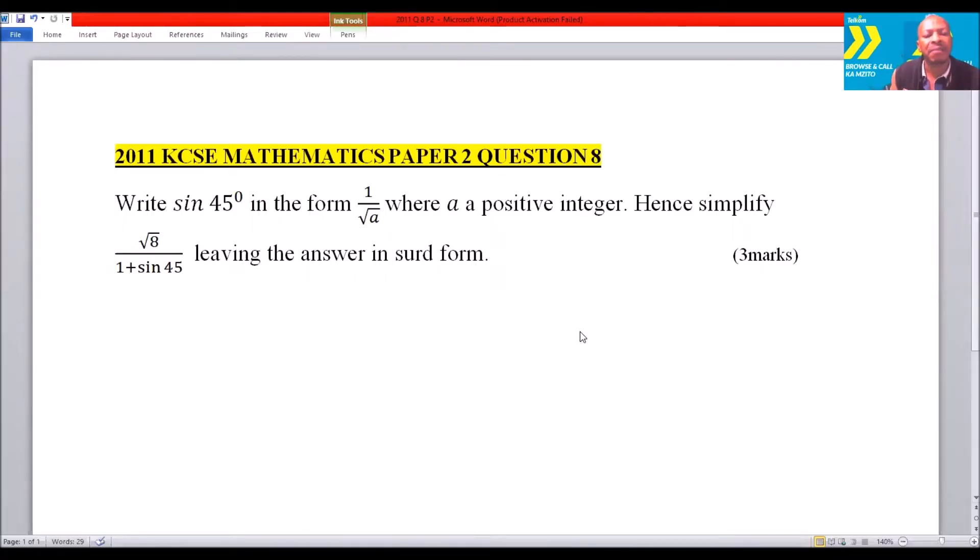We are told: write sin 45° in the form 1/√a, where a is a positive integer. Hence simplify √8/(1 + sin 45°), leaving your answer in surd form.